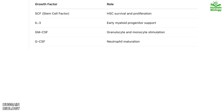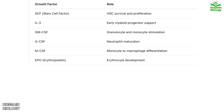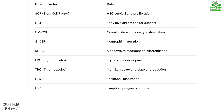M-CSF turns monocytes into macrophages, enhancing immune response and tissue repair. EPO, or erythropoietin, drives erythrocyte development. TPO, or thrombopoietin, ensures megakaryocytes mature and release platelets for clotting. IL-5 specializes in eosinophil maturation, important for combating parasites and allergic responses. IL-7 keeps lymphoid progenitors alive, while IL-15 supports natural killer cell development. Finally, FLT3L plays a key role in dendritic and lymphoid cell development, bridging innate and adaptive immunity.